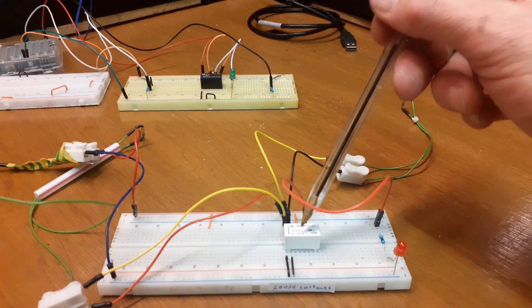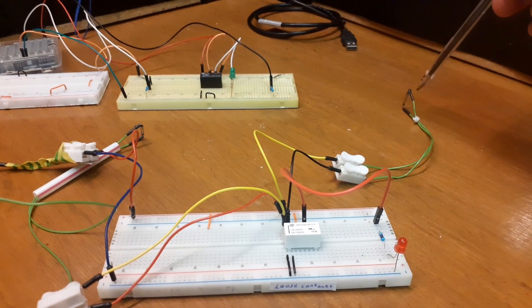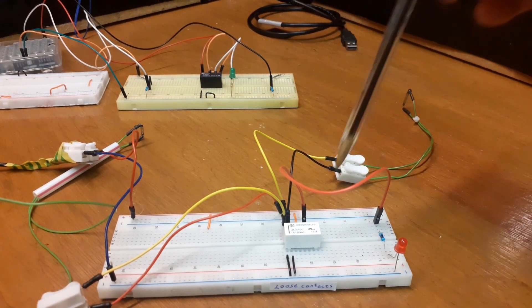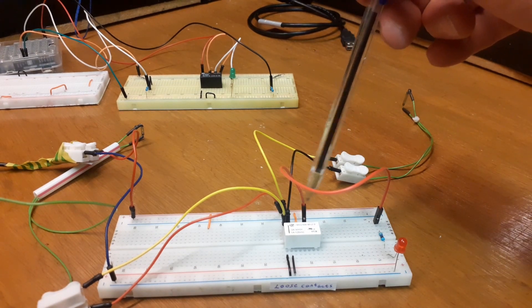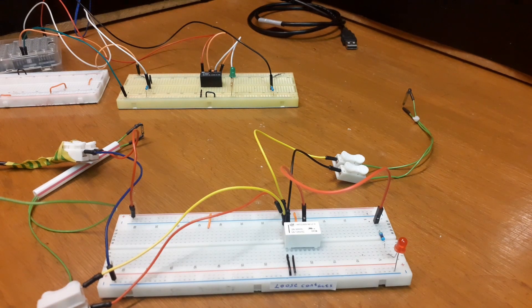That reed switch is operating coil one, that reed switch is operating coil two, and we're going at the moment through common normally closed. And see the operation again - on, off.